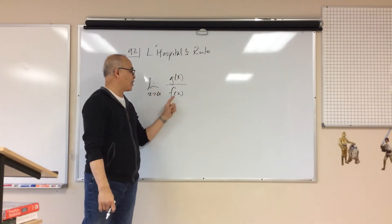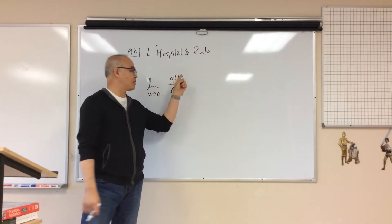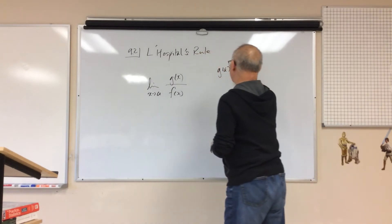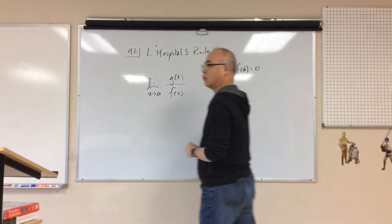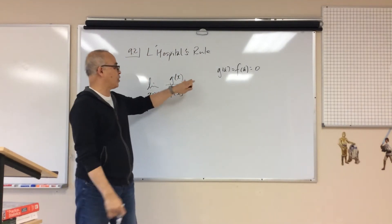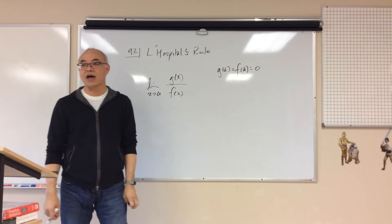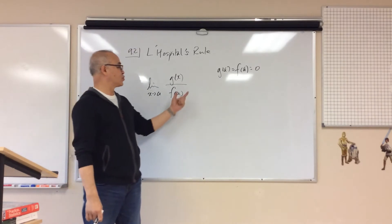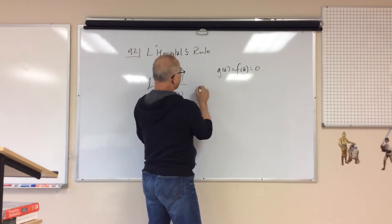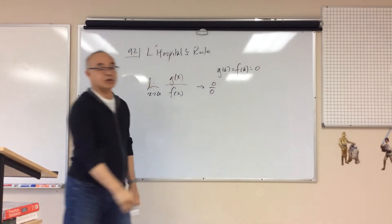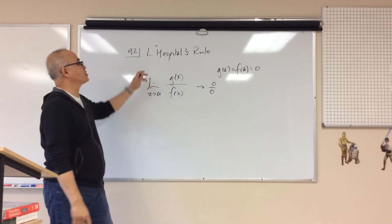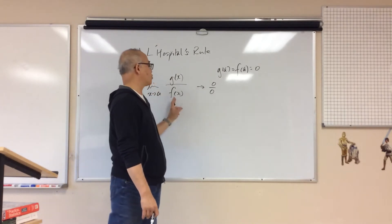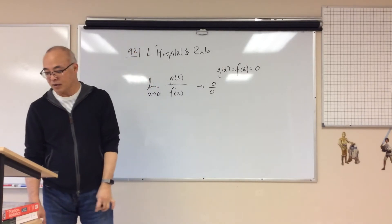If g(a) and f(a) both go to 0, you end up with a form where you get 0 over 0, and we do not know how to handle that. So L'Hopital's rule is strictly for when you're going to end up with a 0 over 0 form. There are several different forms, but we're going to do the first case first — when the top and bottom both go to 0.